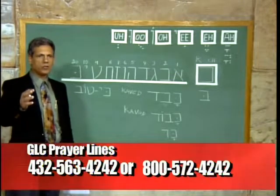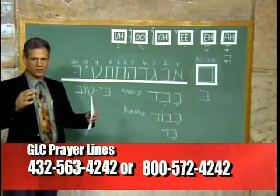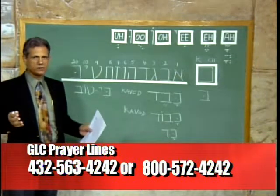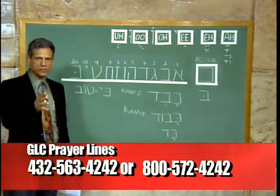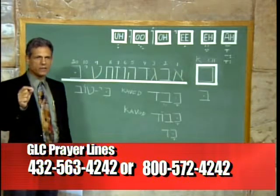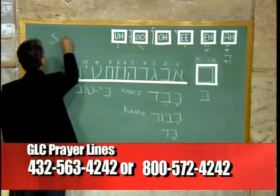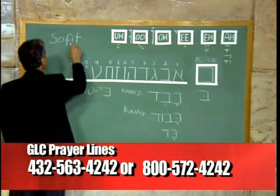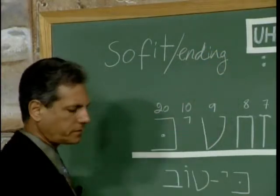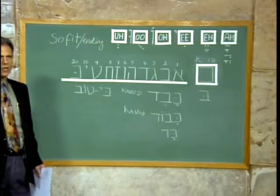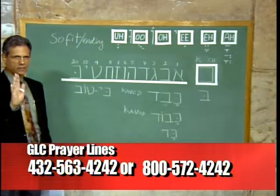Interestingly enough, in English you have something called capital letters — they come at the beginning of a word and have a different graphical form than the rest of the letters. Hebrew doesn't have capital letters, but it has, at the end of words, certain letters that will end with a special letter called an ending letter, or 'sofit.' Five letters of the Hebrew alphabet have a different graphical form that changes when the letter falls at the end of a word. That's it — five letters.